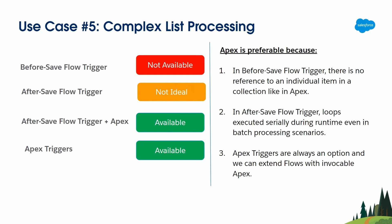The fifth use case is complex list processing. Certain tasks like in-place data transformations can be cumbersome in flows for two reasons: first, there's no way to reference an individual item in a flow's collection like in Apex; second, loops are executed serially in flows even in batch processing scenarios. If you have DML or SOQL inside a loop, it won't be bulkified, increasing your chances of hitting governor limits. Even when Apex triggers are the better option, you can also find value using Invocable Apex to extend flows and combine the power of both tools.